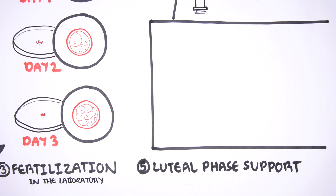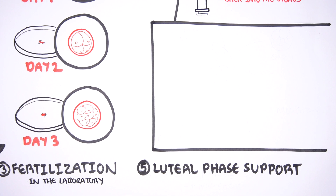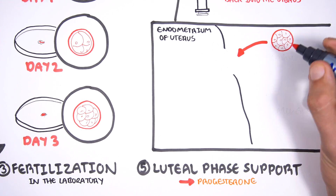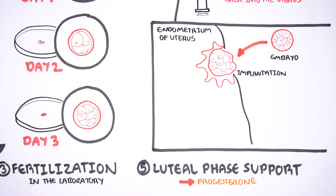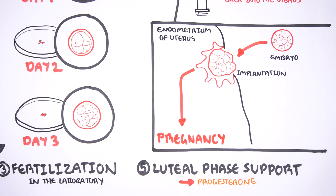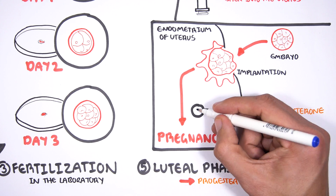Once this occurs, the final step of in vitro fertilization takes place: luteal phase support, which essentially involves progesterone. The luteal phase, if you remember, is the phase of the menstrual cycle where progesterone is normally produced. Progesterone is given to help support and maintain the pregnancy. The embryo is carefully put back inside the uterine cavity where it will implant in the endometrium. This process is called implantation and will lead to pregnancy, with progesterone helping to maintain and support the pregnancy.